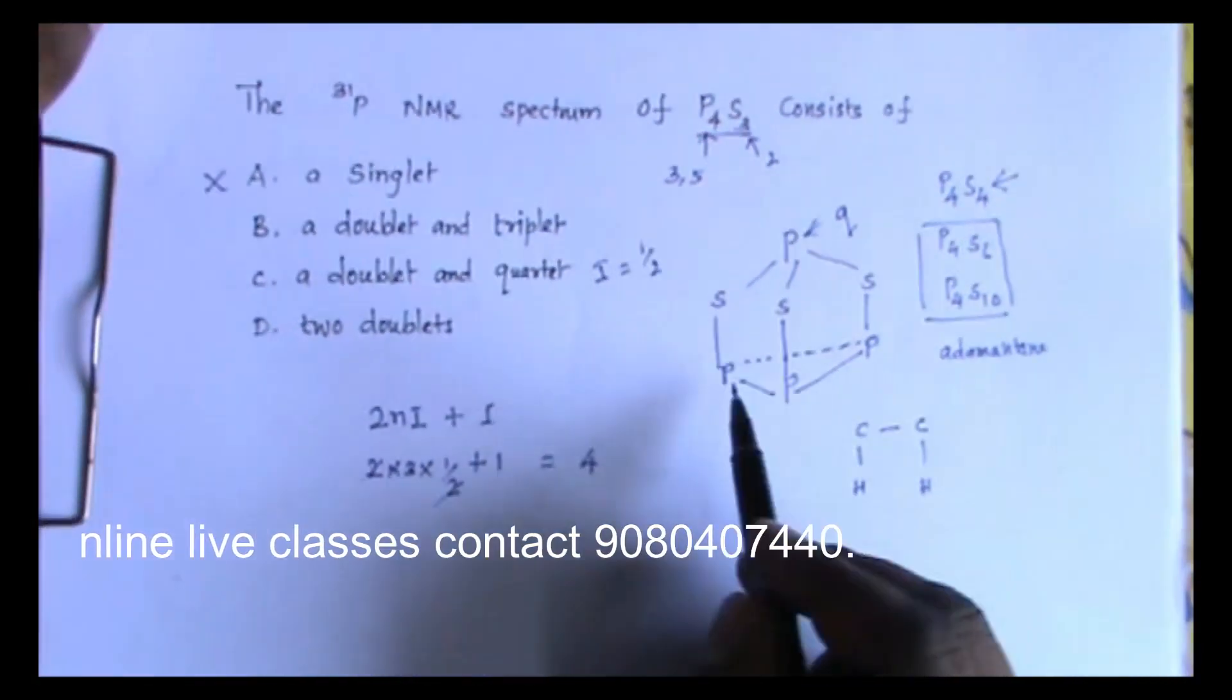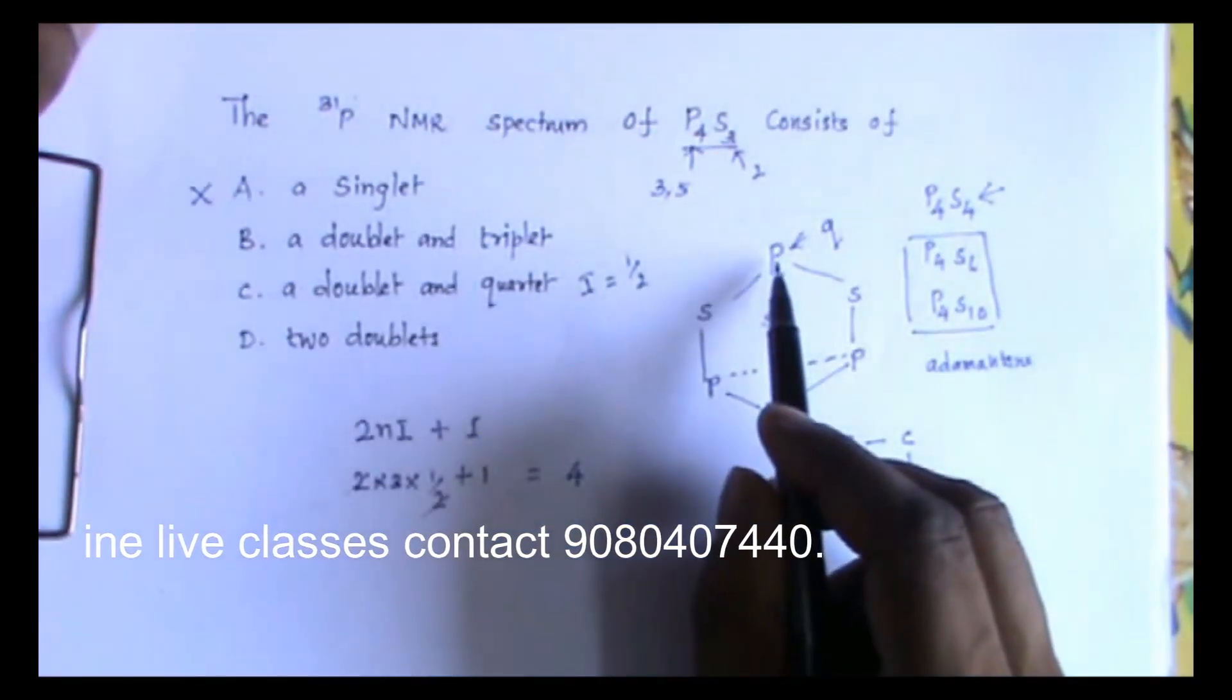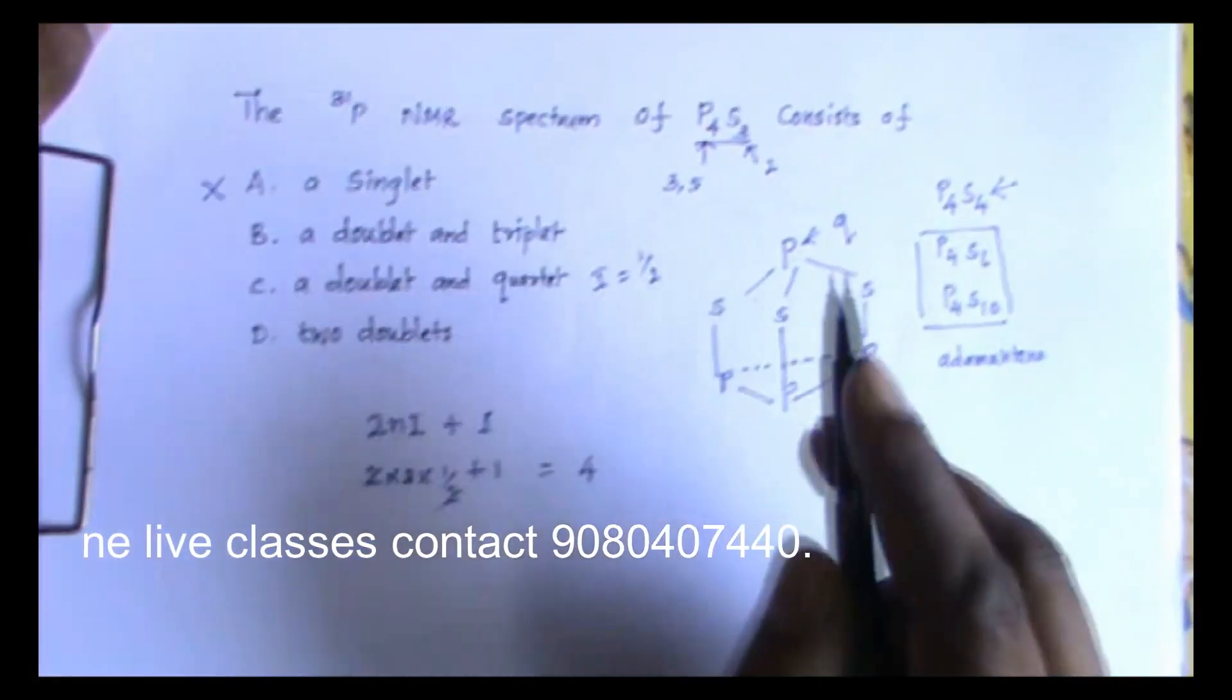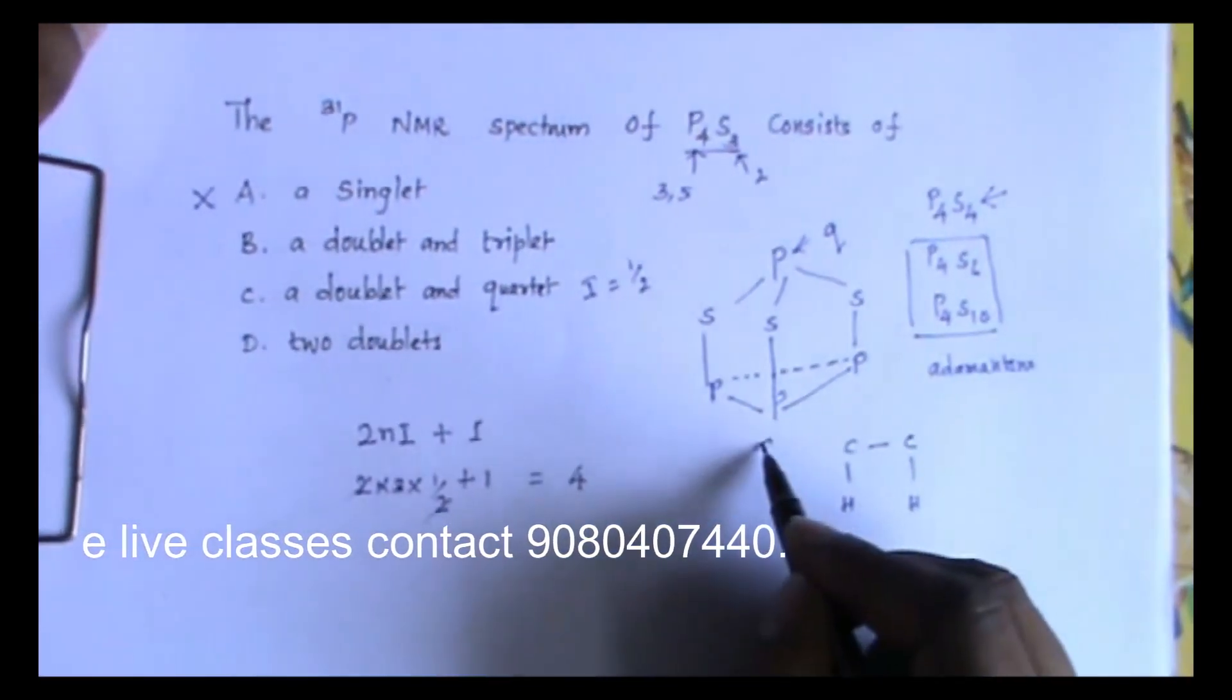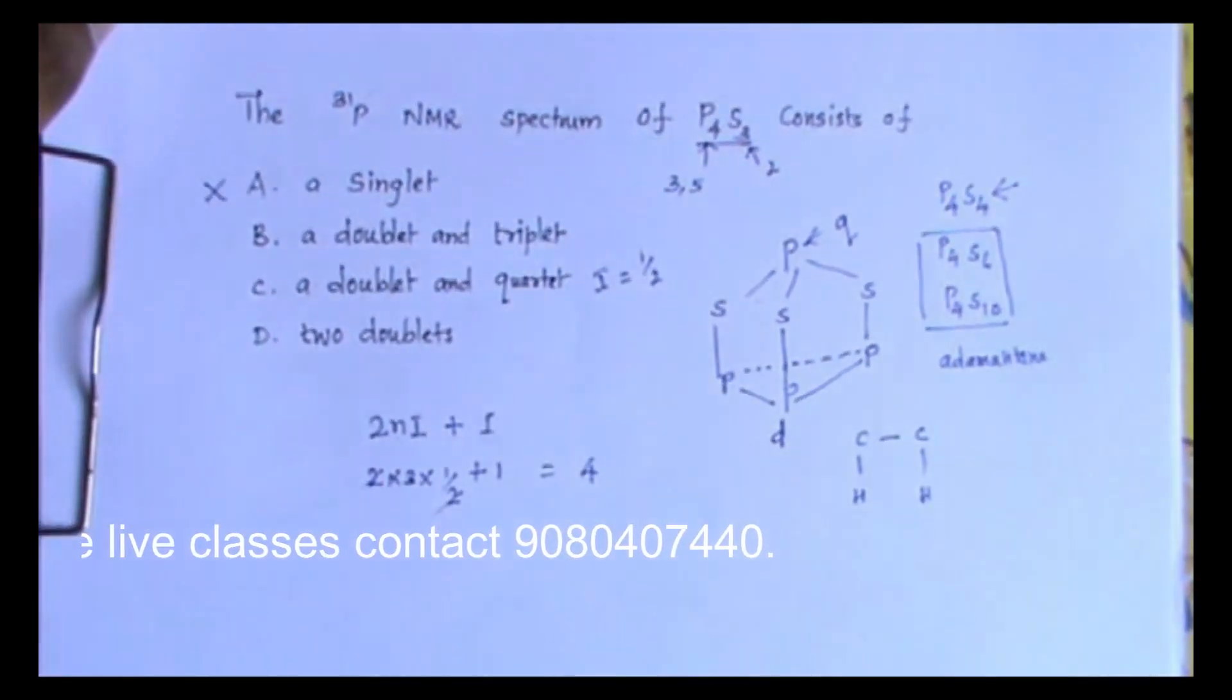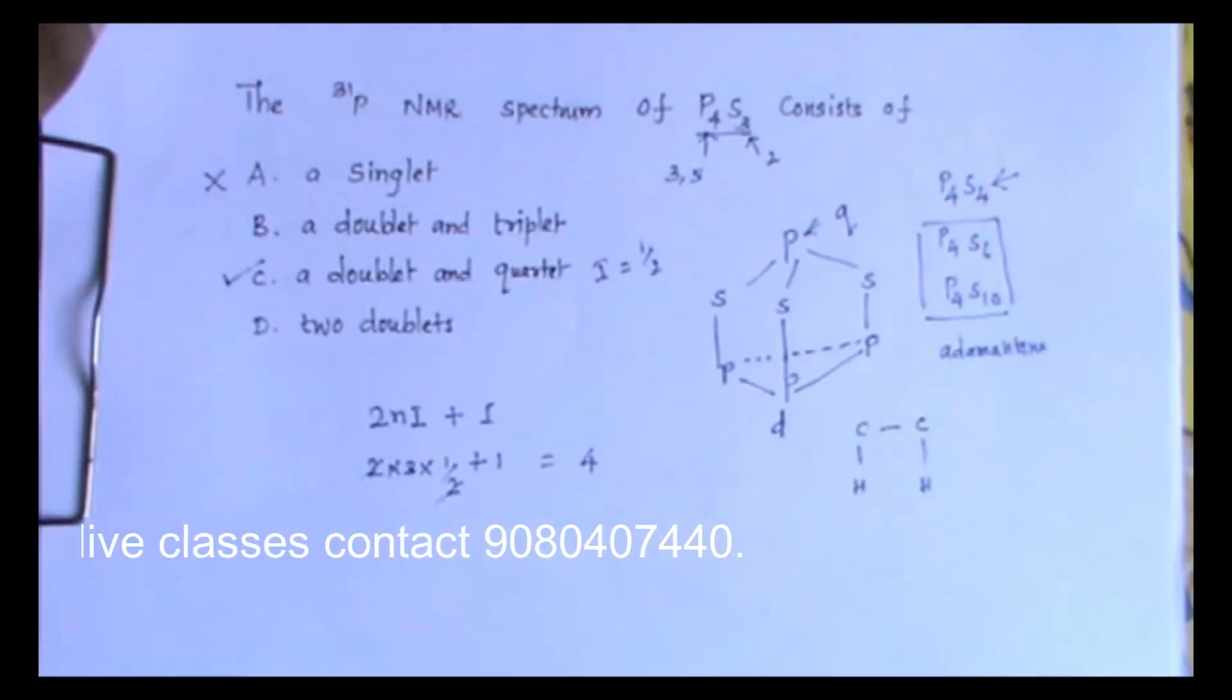What about these three phosphorus atoms? They will give one signal. That one signal will be split by this phosphorus atom. I have only one, so I can expect doublet. So these three phosphorus atoms will give one signal and that will be doublet. So the correct answer is doublet and quartet.